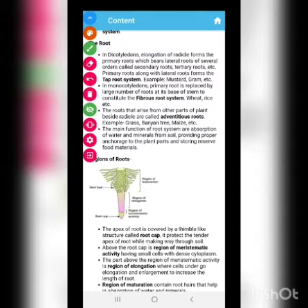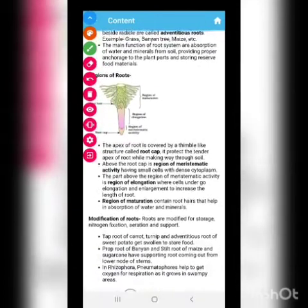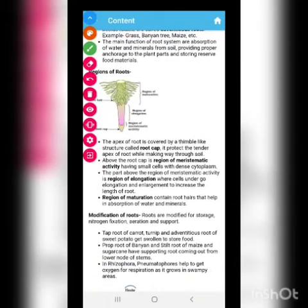The main functions of root system are absorption of water and minerals from the soil, giving the proper power and anchorage for the plant to stand erect, and storing the reserve food material. There are certain regions also in root. These regions are very important to be studied.